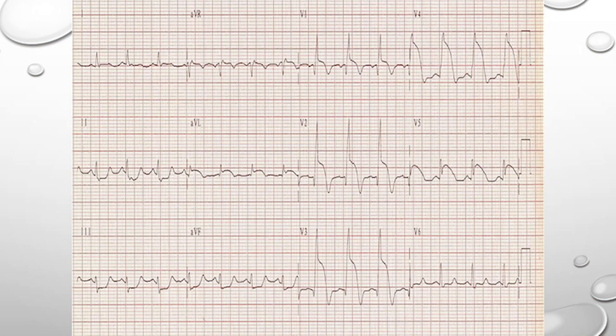How about this one? I see sinus rhythm again with ST depression in lead two, lead three, and AVF, with ST elevation in V1 through V5 and also AVL. So it's a really, really large territory infarct — a big anterior LV STEMI.